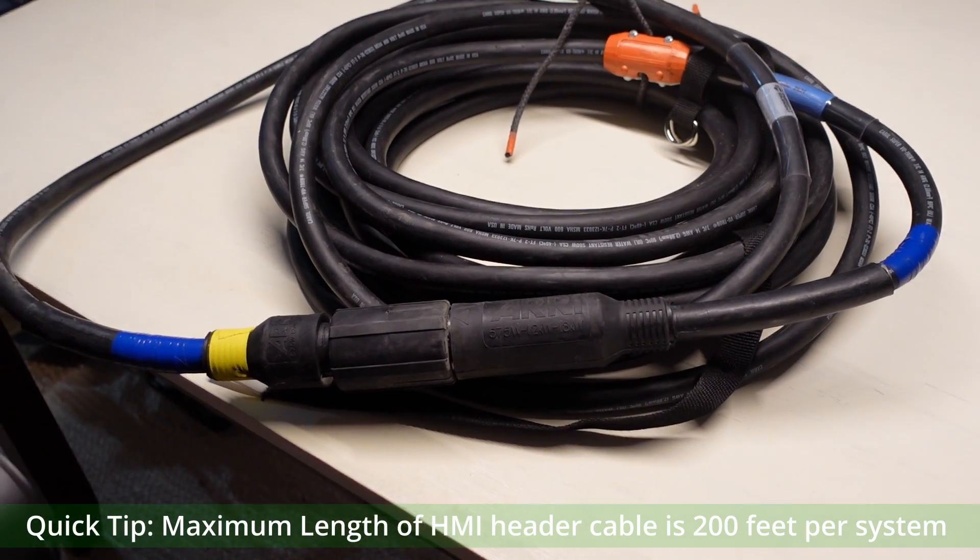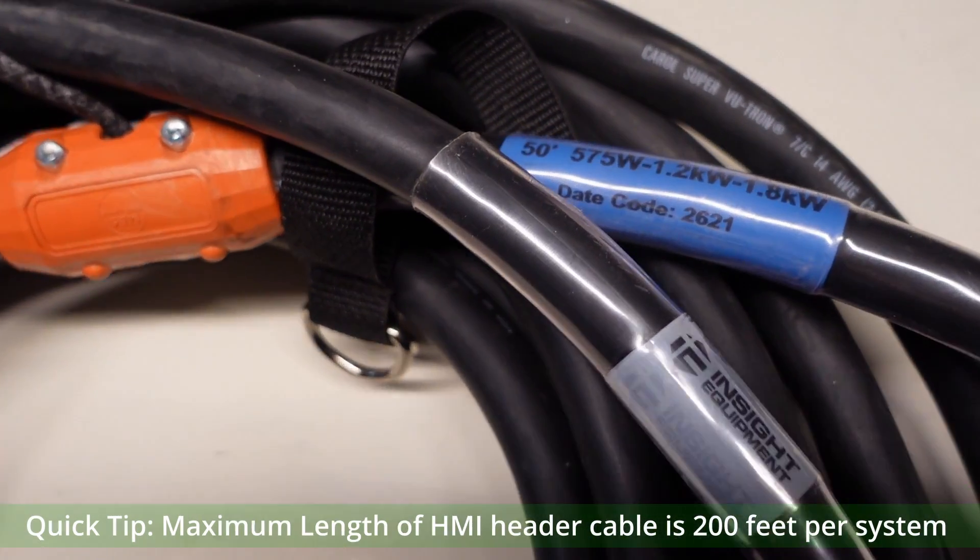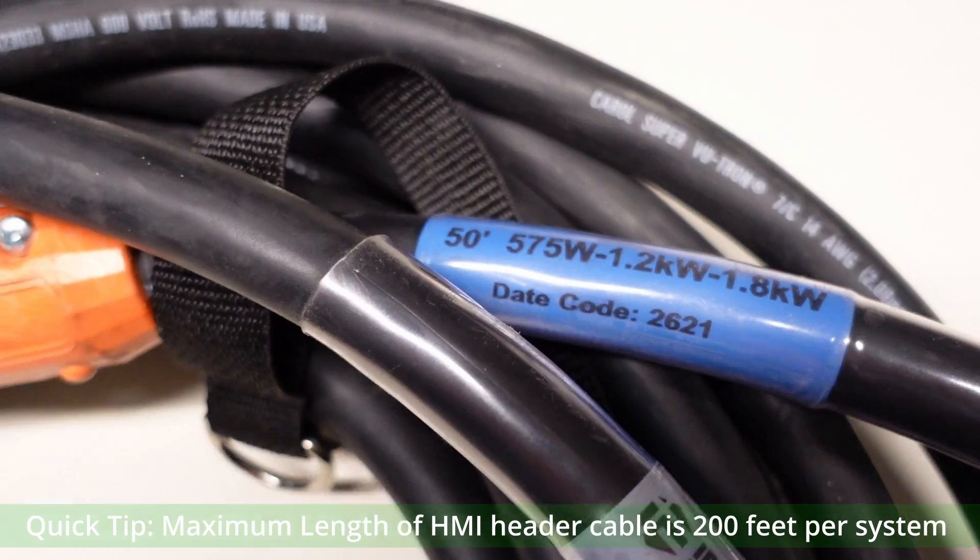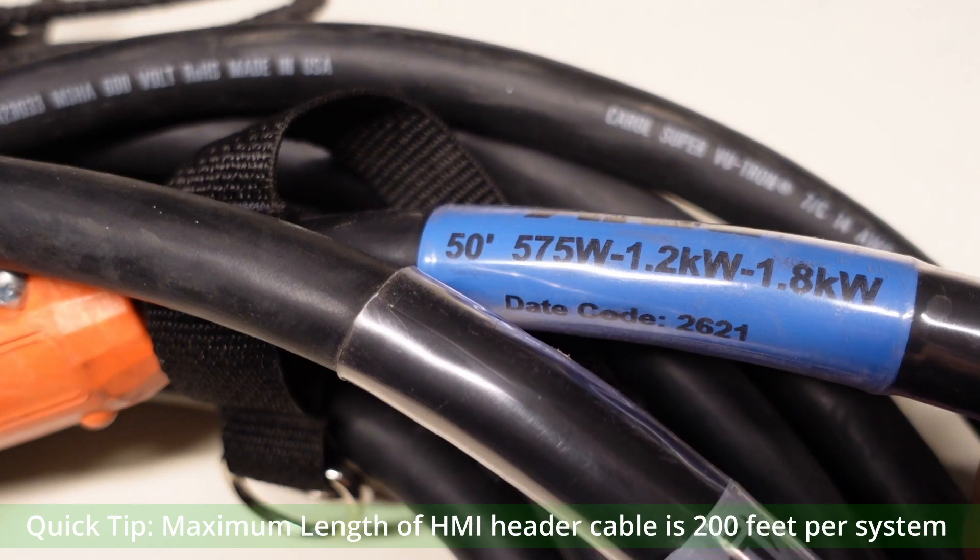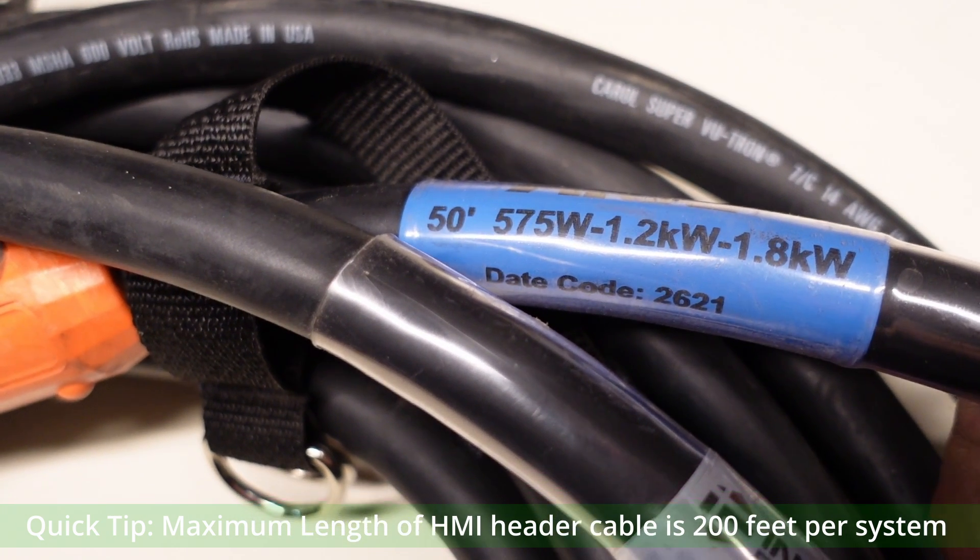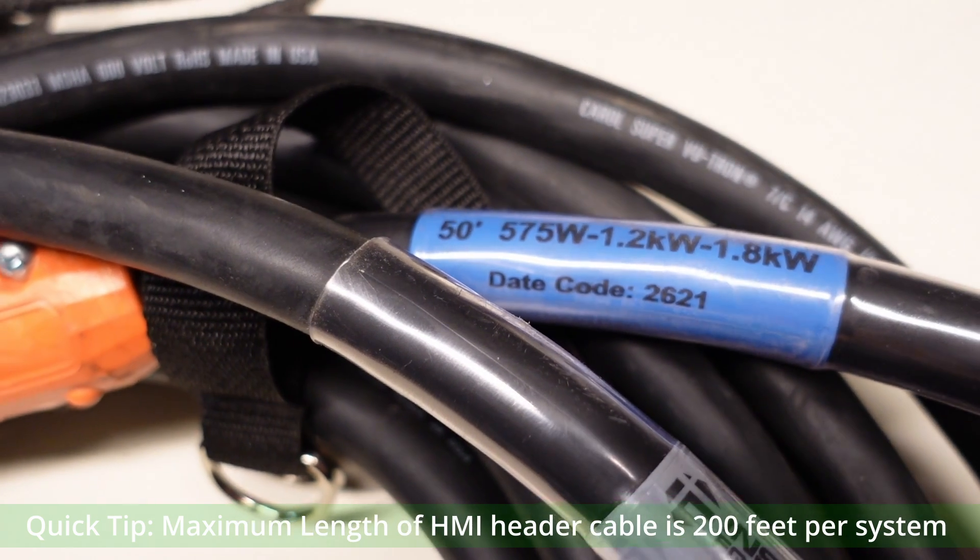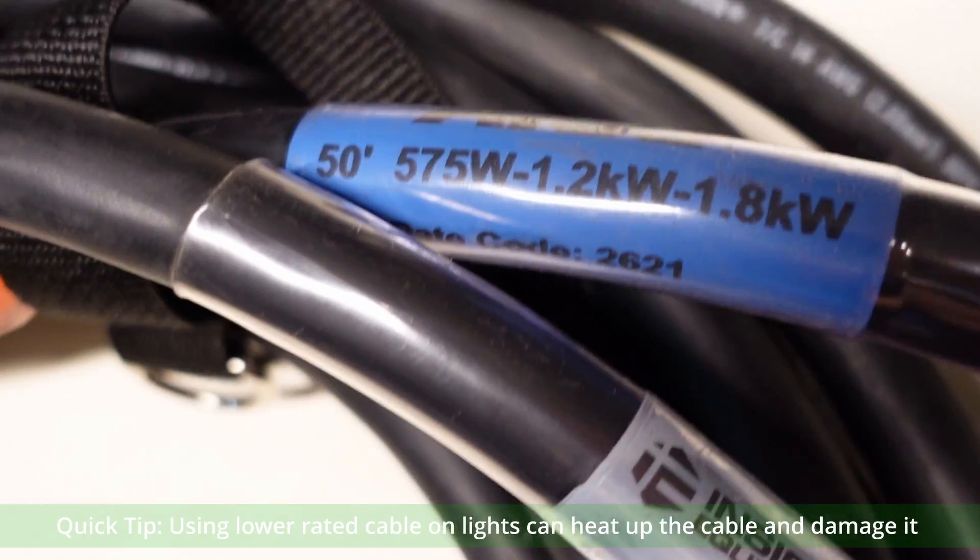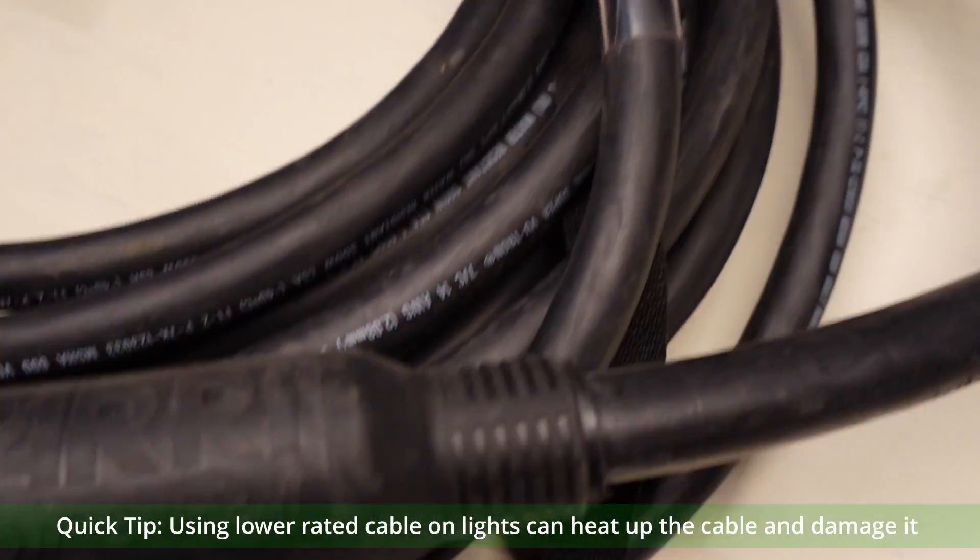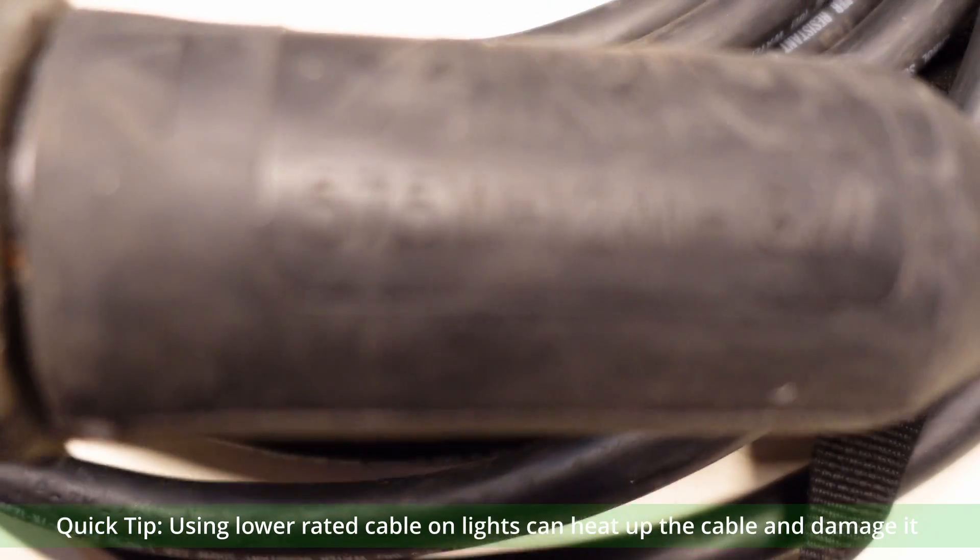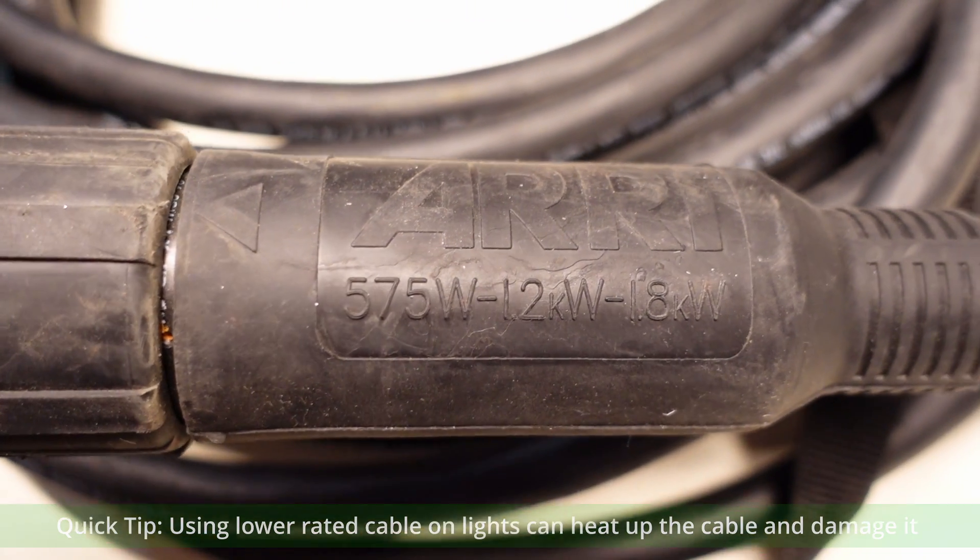The only thing you have to watch out about the header cable is that it's rated properly. Arri writes down on the side that it's rated for three different wattages. Some older ones are only rated for the 575, which you shouldn't use on the M8. You also want to check the holes in the pins of the connectors of the header cable, which I will show you later when I turn on this system. You won't be able to connect a header cable that's rated to another light, like for example a 4K. So don't worry about it, and of course watch out for loose copper or insulation.